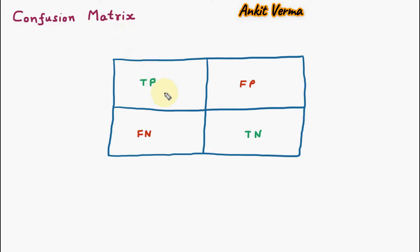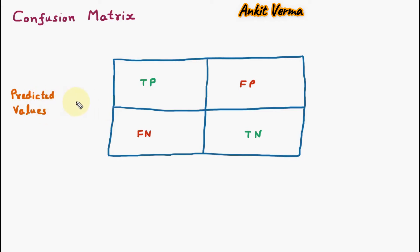Here is the confusion matrix. On one side we are having predicted values. This side is for the predicted values. Prediction means we are guessing something. The predicted values can be positive or negative.